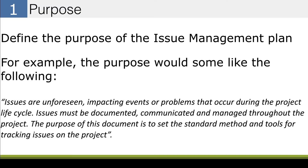Let's start with number one: the purpose. You have to define the purpose of the issue management plan. For example: issues are unforeseen, impacting events or problems that occur during the project. Issues must be documented, communicated, and managed throughout the project. The purpose of the document sets the standard method and tools for tracking issues on the project. It's a key component to make sure people understand why you develop an issue management plan. You can use this purpose, tweak it, modify it, but it's important to have a purpose for your document.